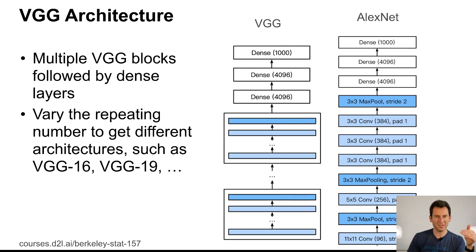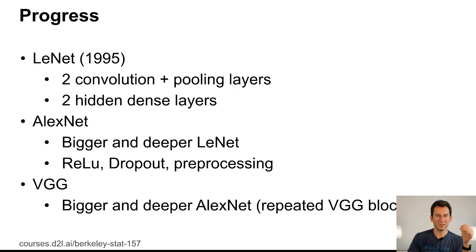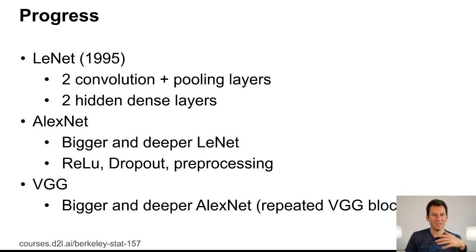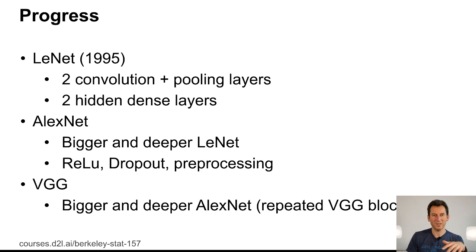This gives you VGG 16, VGG 19, and so on. The overall progression is: LeNet used two convolutions and pooling layers into dense units; AlexNet made everything bigger and deeper; and VGG made it bigger and deeper still.